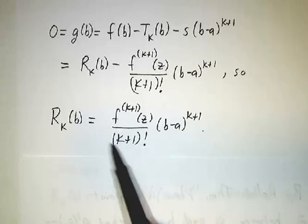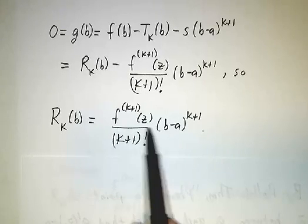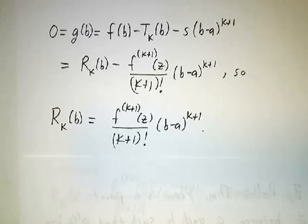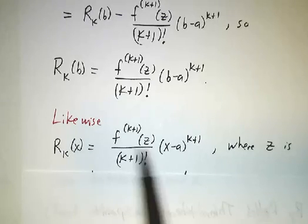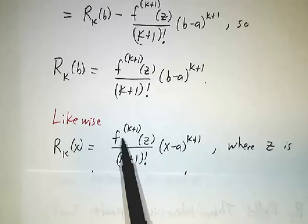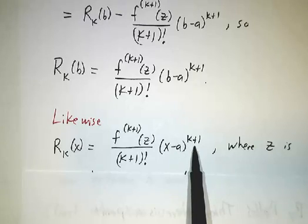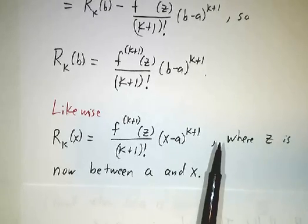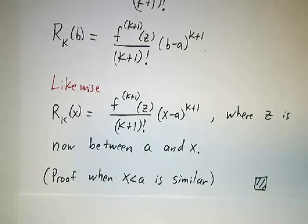Now I did this whole proof thinking about b. But this is good for all values of b. So if instead of calling it b, we call the point where this equation holds x, we get Taylor's theorem. The remainder at x is given by this whole expression. The k plus first derivative at z divided by k plus 1 factorial times (x-a) to the k plus 1. Where z is not just between a and b. It's between a and x. Now, throughout all this, I assumed that b was bigger than a. You can do the same kind of calculation on the other side.